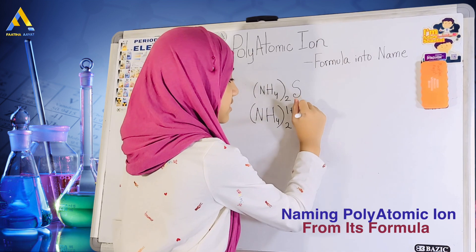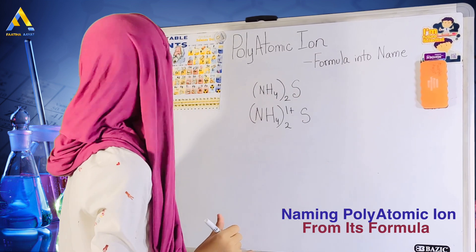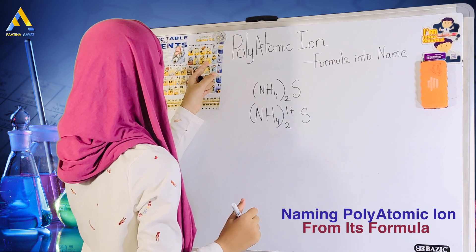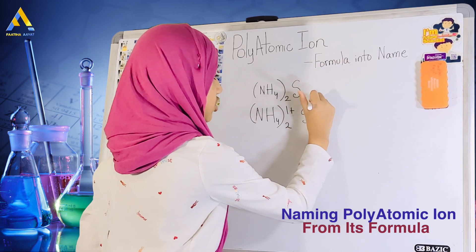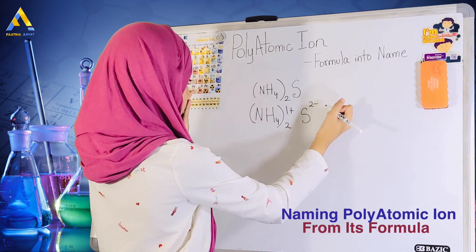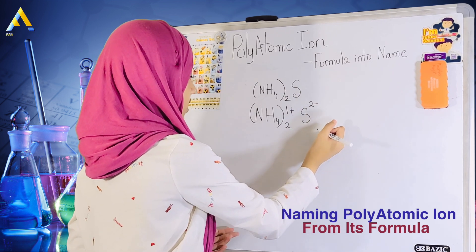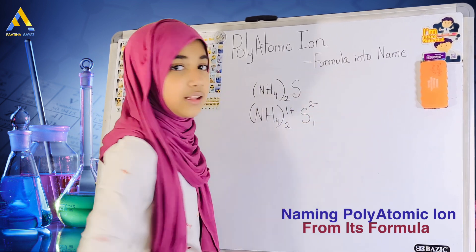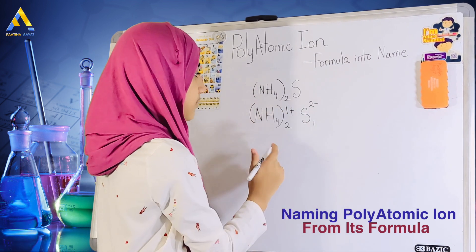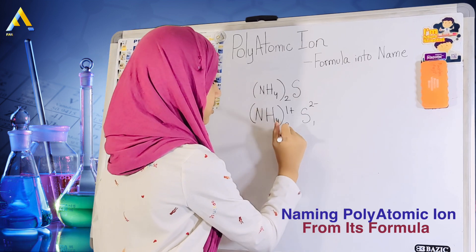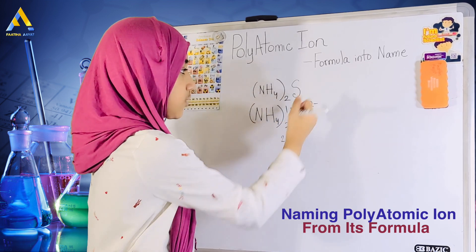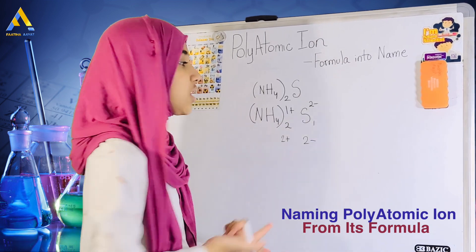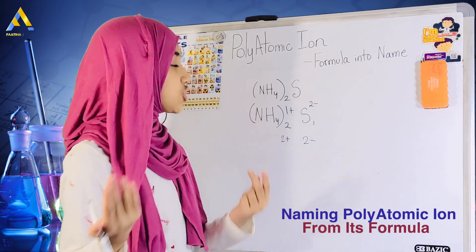Now, S is sulfur, obviously. Now, sulfur on my periodic table is carrying a 2 minus charge. So, what we need to do is it's automatically cancelled out. Because 2 times 1 plus is 2 plus. And then 2 minus times 1 is 2 minus. So, since they're the same, just opposite charges, we can just kind of cancel it out.